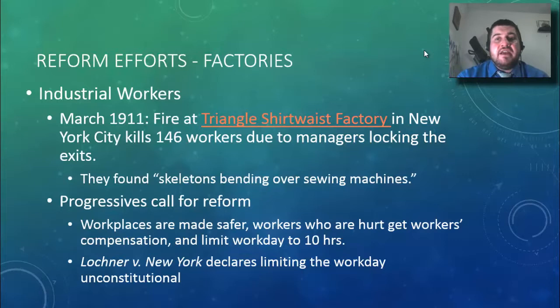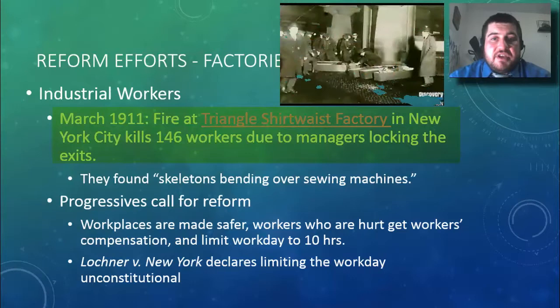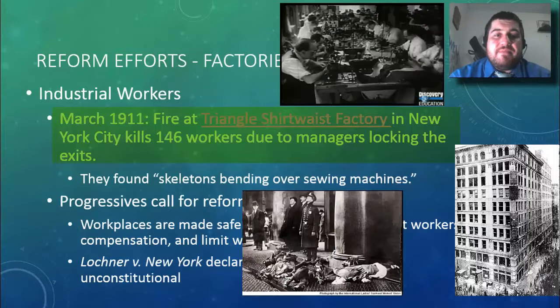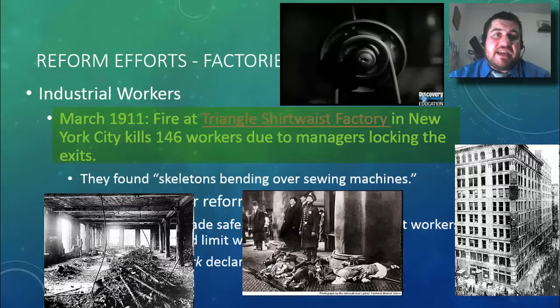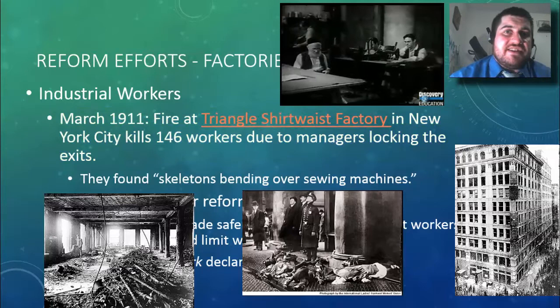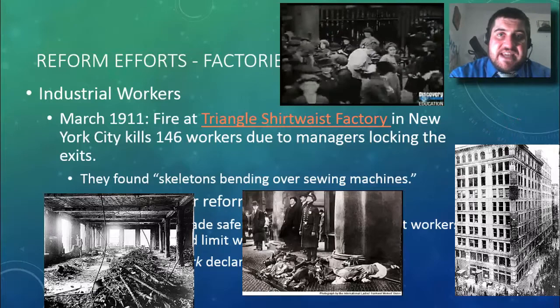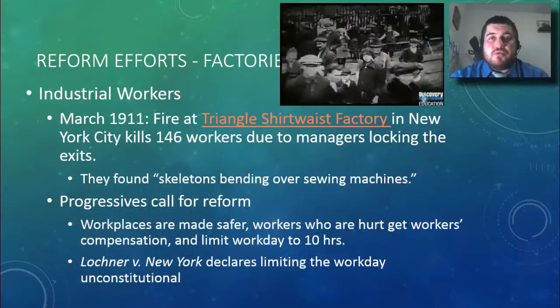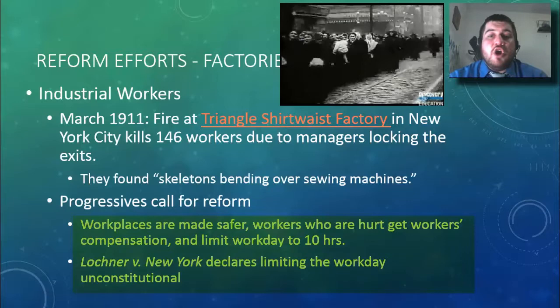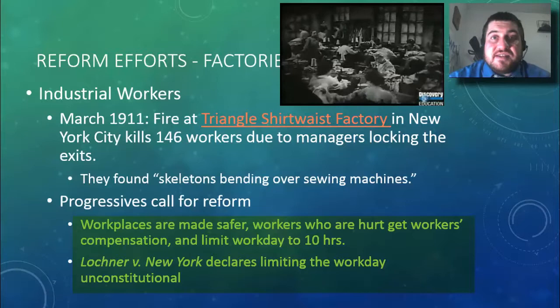For adult labor reform, there was a triggering point: in March 1911, there was a fire at the Triangle Shirtwaist Factory, which killed 146 workers — most of them women — due to managers locking the exits to keep workers from leaving. It was a high-rise building and the fire swept through everything so fast they found skeletons bent over the sewing machines. After this, progressives called for workplace safety codes, and workers hurt on the job now received workers' compensation instead of just being fired.